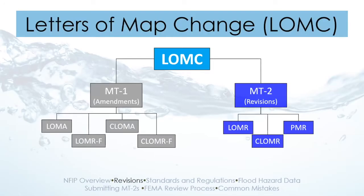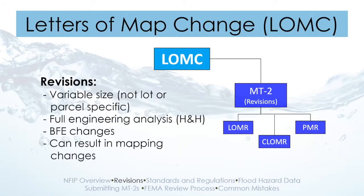Jumping into the basic types of revisions — there are two branches on the letter of map change tree. The MT1s or amendments, which is not what we're focusing on today, and the MT2 revisions, which are LOMARs, CLOMARs, and PMRs. Generally speaking, these revisions can be variable in size, are not specific to a parcel or lot, and include a full engineering analysis, which can include hydrology and almost always hydraulic changes, changes to base flood elevation, and mapping updates.